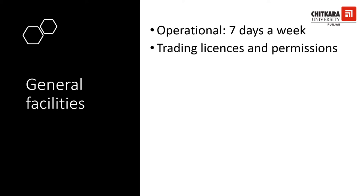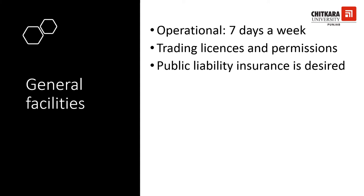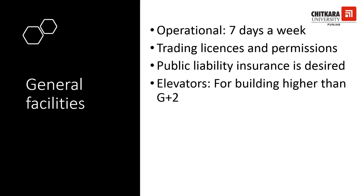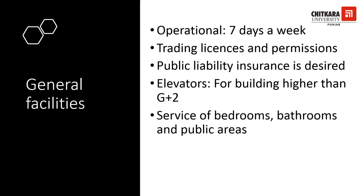Regarding the general facilities in the checklist: all categories of hotels must be operational 24 by 7. It is necessary for all categories of hotels to have all the permissions and licenses to operate. Public liability insurance, which protects the business against claims due to accidents during operations, is desirable for all categories. For all categories with a building taller than two floors, an elevator is a must. All bedrooms, bathrooms, and other public areas must be serviced regularly — mandatory for all — and floor surfaces must be clean and in proper shape.